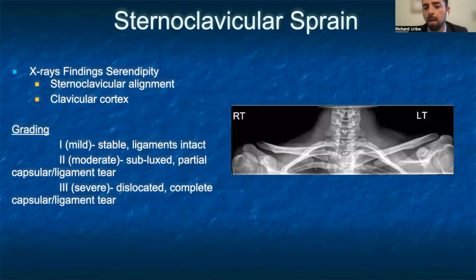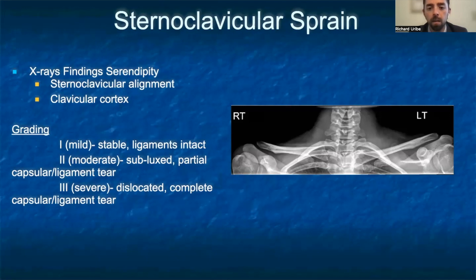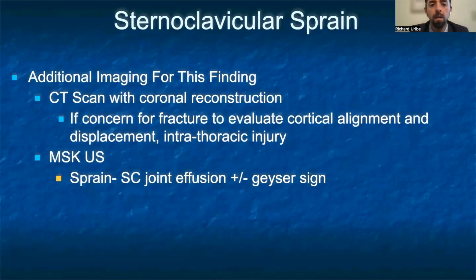SC sprains are best seen with the serendipity view. On the x-ray to the right, at the center of the picture, there is a malalignment and an anterior dislocation of the sternoclavicular joint. Grading of the sternoclavicular sprain is as follows: Grade 1 shows a stable joint with intact sternoclavicular and costoclavicular ligaments. Grade 2 shows a subluxed joint with a tear in the sternoclavicular ligaments but intact costoclavicular ligaments. Grade 3 shows a dislocated joint with complete tear in ligaments. Additional imaging includes a CT scan with coronal reconstruction if there is concern for fracture or intrathoracic injury. Ultrasound is useful in evaluation of SC joint injuries, where you can often see a joint effusion and/or a geyser sign.